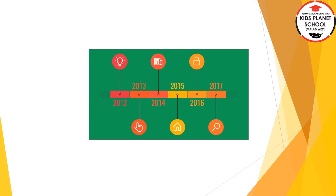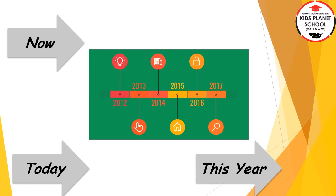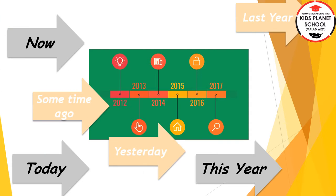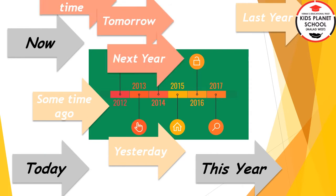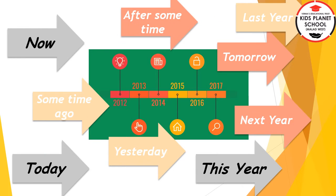For our convenience, we divide time in different ways. Often we use words like now, some time ago, after some time, or today, yesterday, tomorrow, this year, next year, etc. When we use these words, we are actually measuring time.